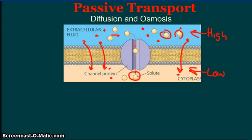Large and charged molecules move through a special channel protein, which is integrated or embedded in that lipid bilayer. Channel proteins allow large molecules to pass through the cell membrane — molecules that normally would be too large to pass through the lipid bilayer on their own. This is passive transport because they are moving from a high concentration down the hill to a low concentration, and no energy is required for that to occur.